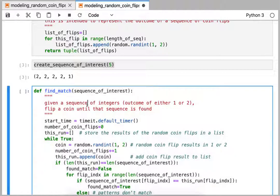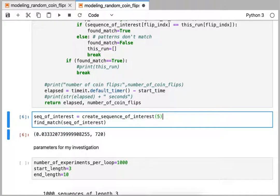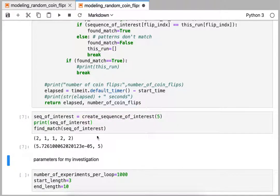So I need to run that cell first, and I can get back two things: the time it took in seconds to execute a search for my sequence of interest. So now my sequence of interest of five digits is heads, heads, tail, heads, heads, and it took 0.0004 seconds to find a match, and there were 75 coin flips to get to a match for this sequence.